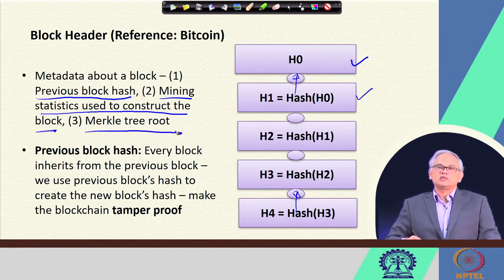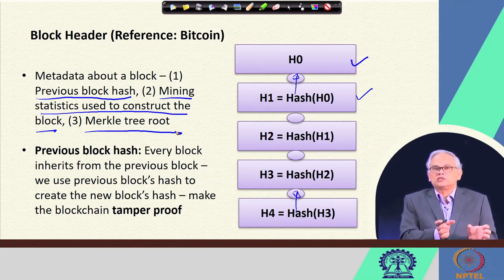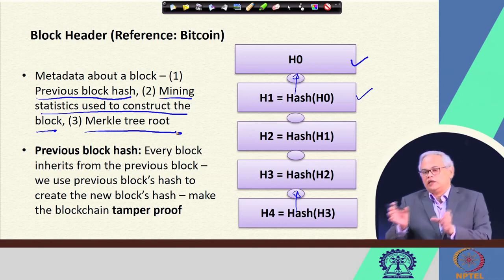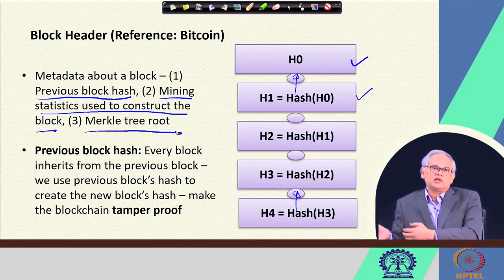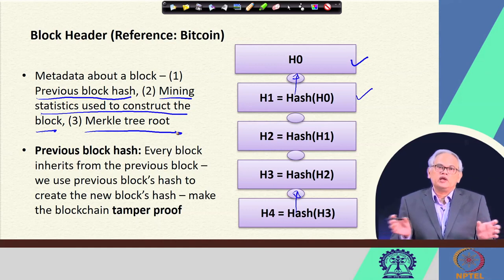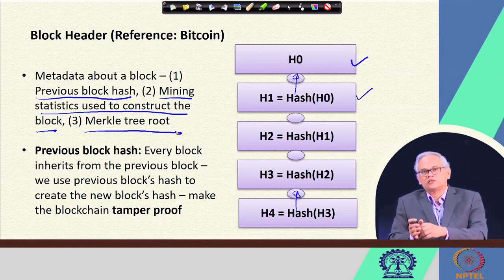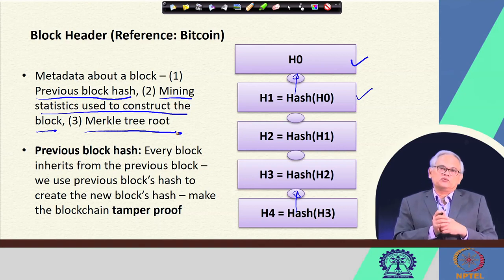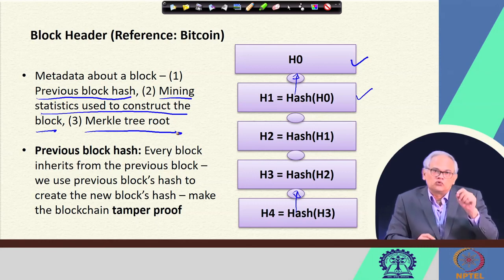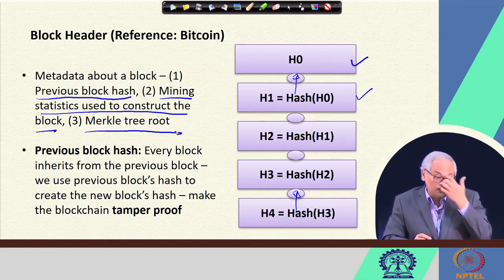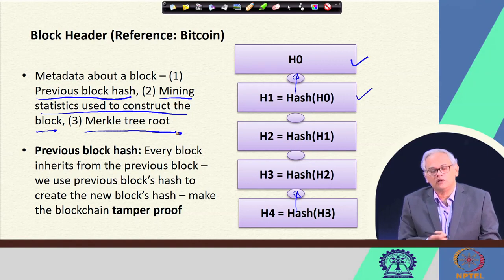The transactions are organized in the form of a Merkle tree. For example, with 8 transactions: first and second are hashed, third and fourth are hashed, fifth and sixth, seventh and eighth. Then these 4 hashes are paired and hashed again, and those 2 hashes are finally hashed to get the root hash — the Merkle tree root — which is kept in the block header.